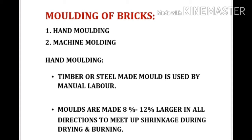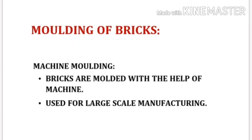Molding of bricks: We can mold bricks by hand or by machine. In case of hand molding, a timber or steel mold is used by manual labor. Molds are made 8 to 12 percent larger in all directions to account for shrinkage during drying and burning. In case of machine molding, bricks are molded with the help of a machine, which is used for large scale manufacturing.